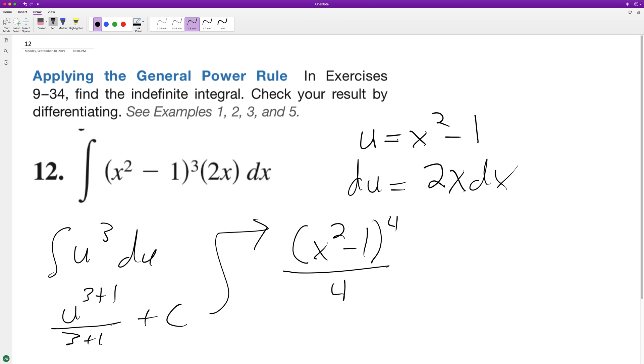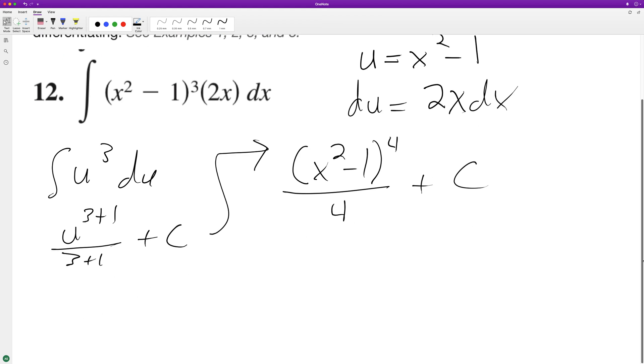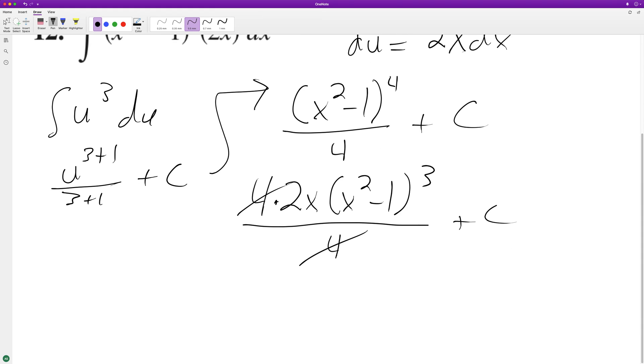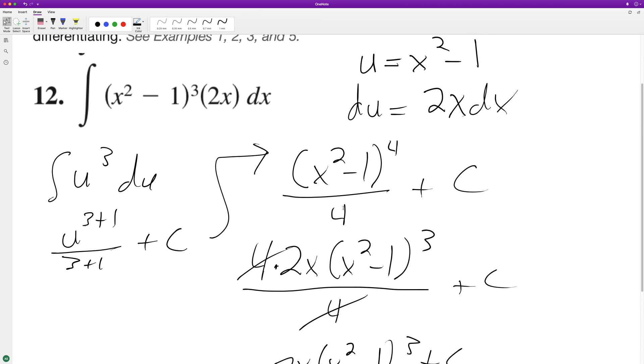Plus c. So this is our integral, but we can go ahead and test it to make sure it checks out. So pull down the four times 2x, that's the derivative from the inside, x squared minus one raised to the third over four. Cancel these out, and then plus c. So we end up with ultimately 2x times x squared minus one cubed plus c, and that matches up with the original function.